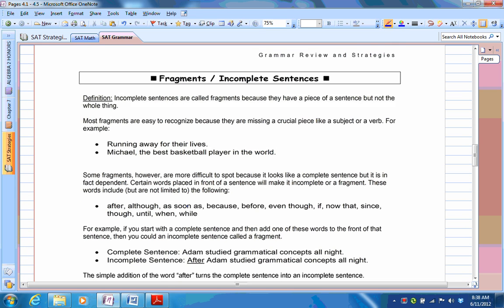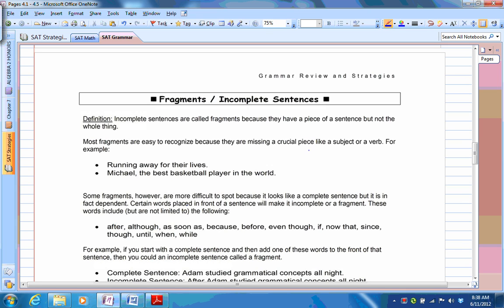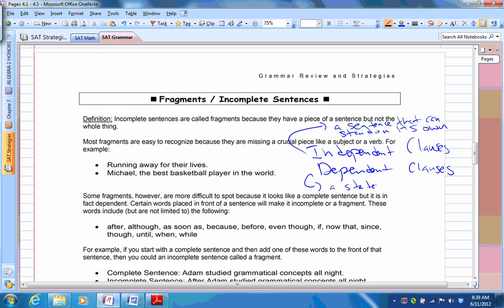Okay, let's talk about fragments and incomplete sentences. One thing I need to talk about are independent and dependent clauses. An independent clause is a sentence that can stand on its own. A dependent clause is basically a statement that can't stand on its own as a sentence.